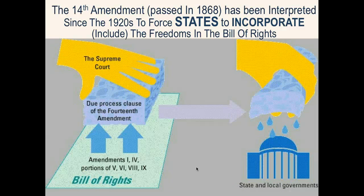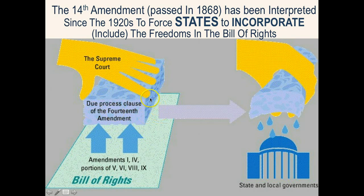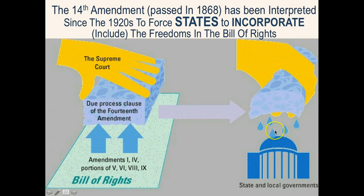This last thing I want to show you is kind of cool because it shows how the Supreme Court used the Due Process Clause of the 14th Amendment — represented here by a big ol' sponge. You'll notice it is sucking up amendments 1, 4, 5, 6, 8, and 9 from the Bill of Rights. So the Due Process Clause of the 14th Amendment is sucking up these Bill of Rights and squeezing out these freedoms and liberties on top of state and local governments. This does a really good job showing how the Supreme Court interpreted the Bill of Rights using the 14th Amendment to apply them to the states.